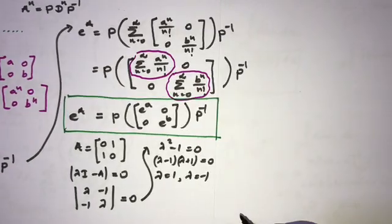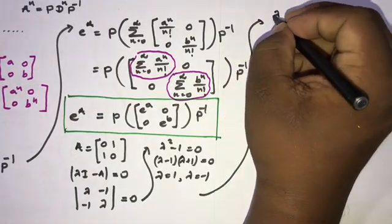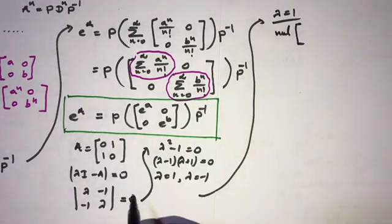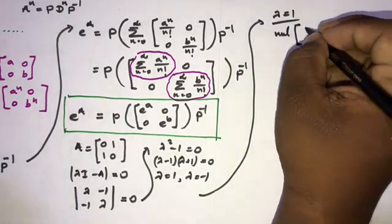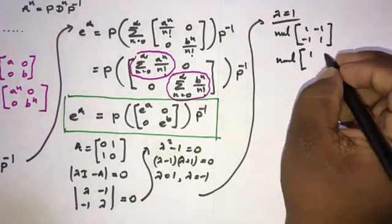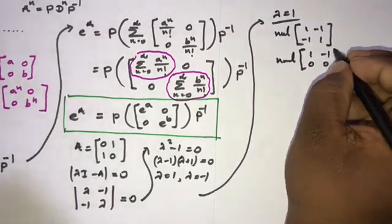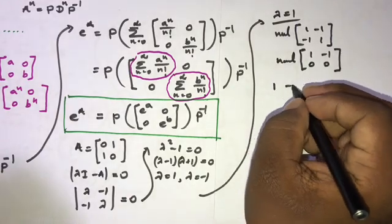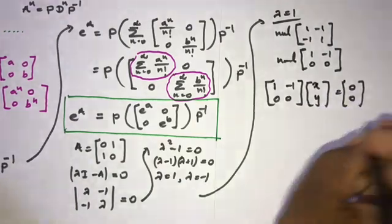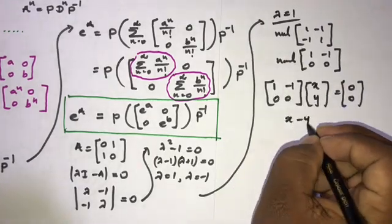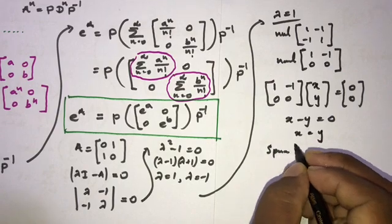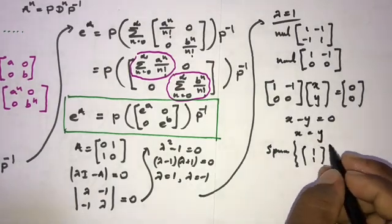Now we are going to find eigenvectors. When lambda equals 1, we compute the null space of (A minus I): the matrix [[1, -1], [-1, 1]]. Row reducing gives [[1, -1], [0, 0]], so x minus y equals 0, meaning x equals y. The eigenvector is the span of [1, 1].